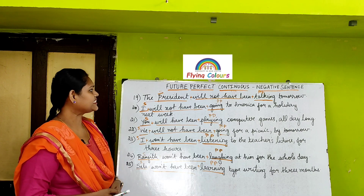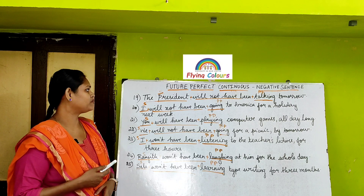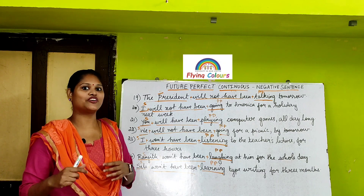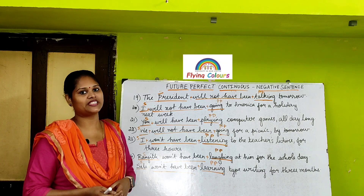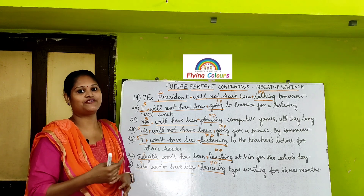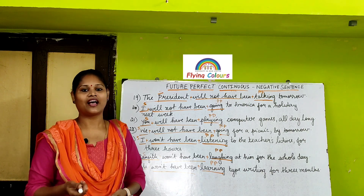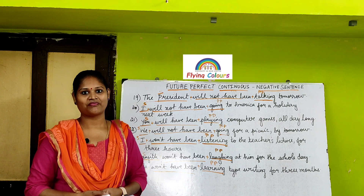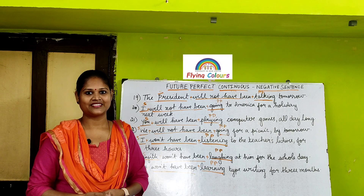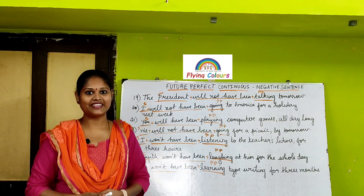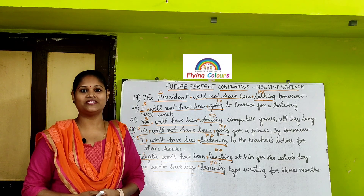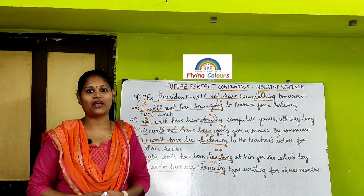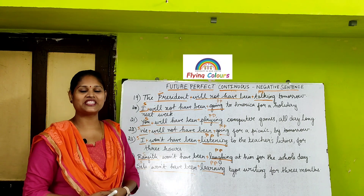The president will not have been talking tomorrow. President is the subject plus will not have been plus talking is the present participle — the talking action started in the past, continuing in the present, but won't have been continuing tomorrow, which is the specific duration. Who is the current president of India? Our Indian president's name is Draupadi Murmu. She is the woman president of our India — very proud that a woman president is ruling our country.